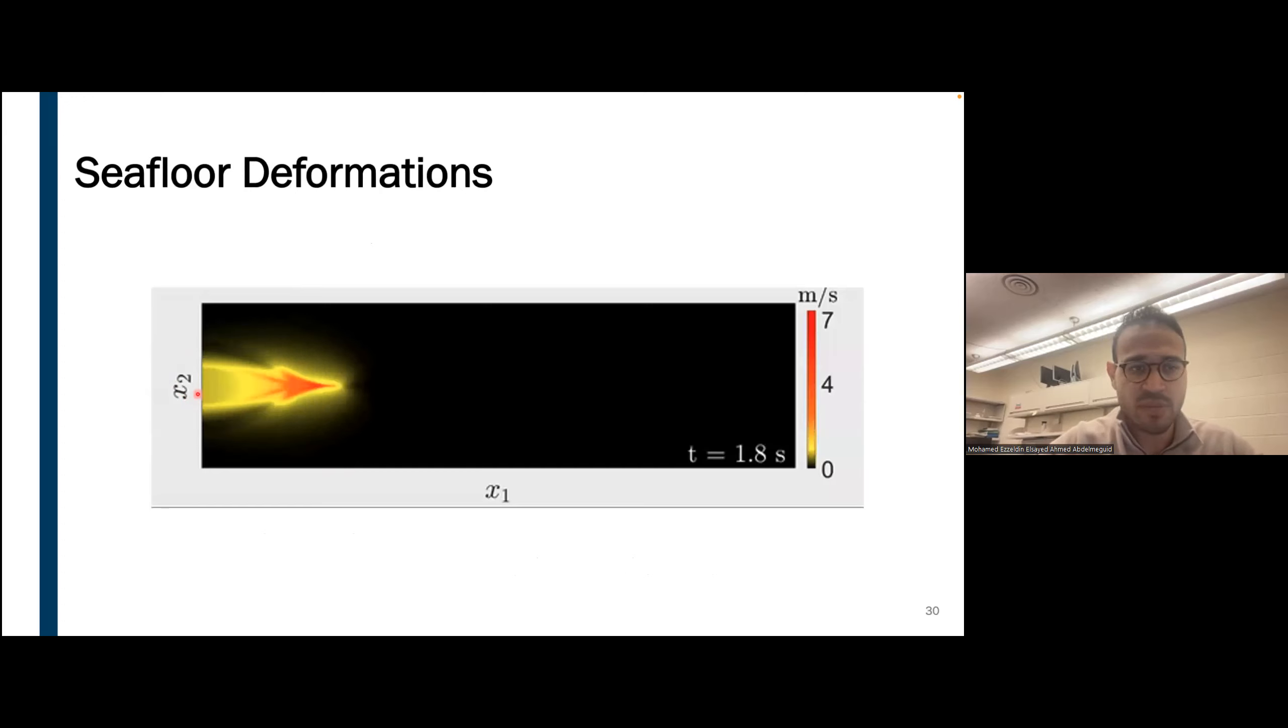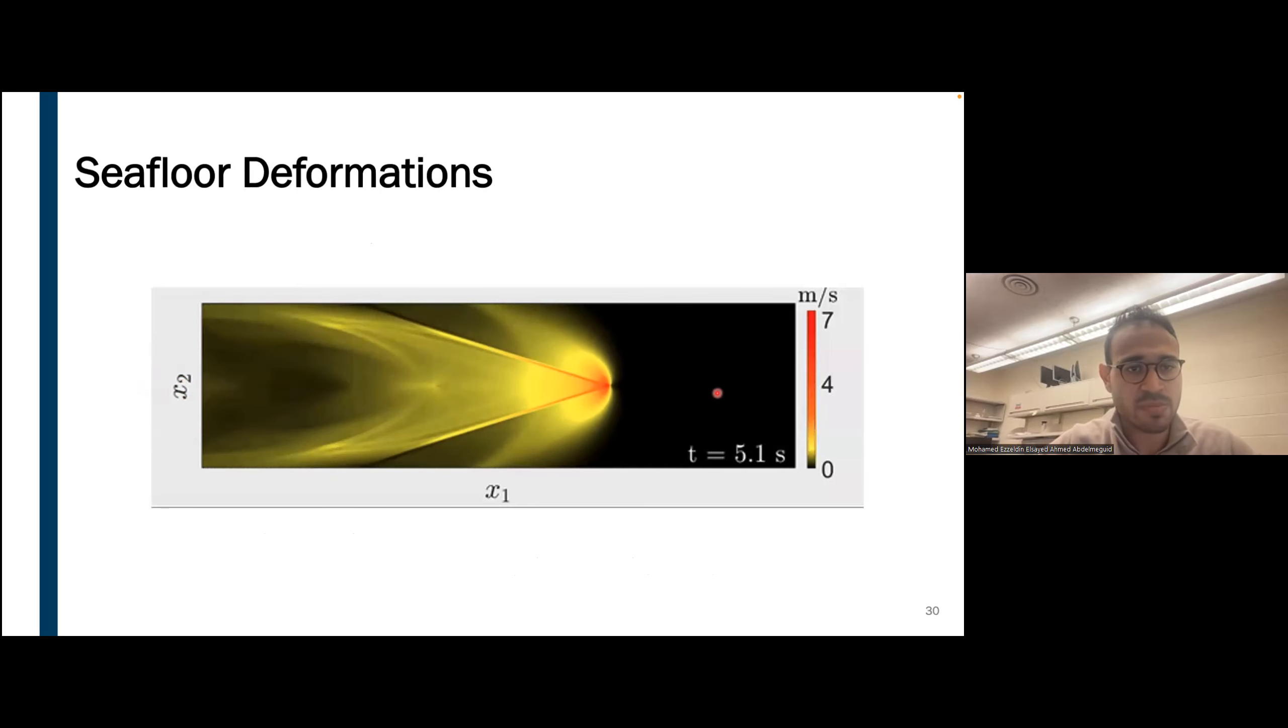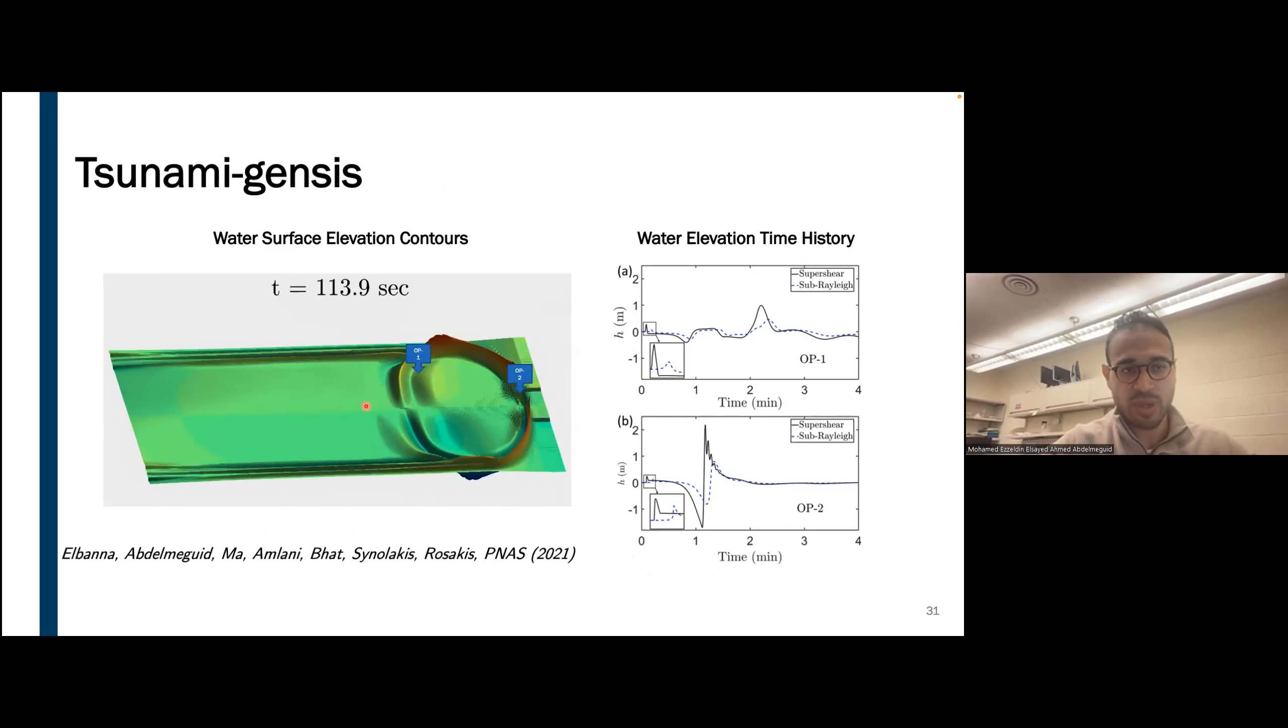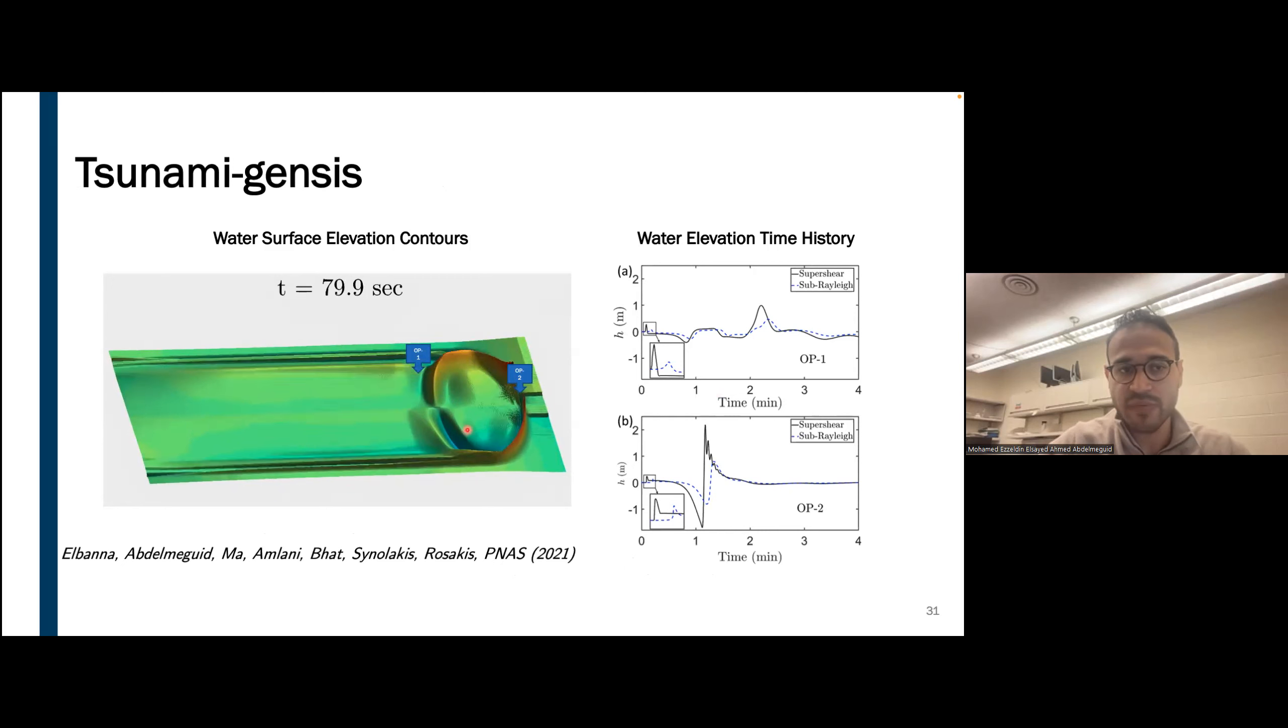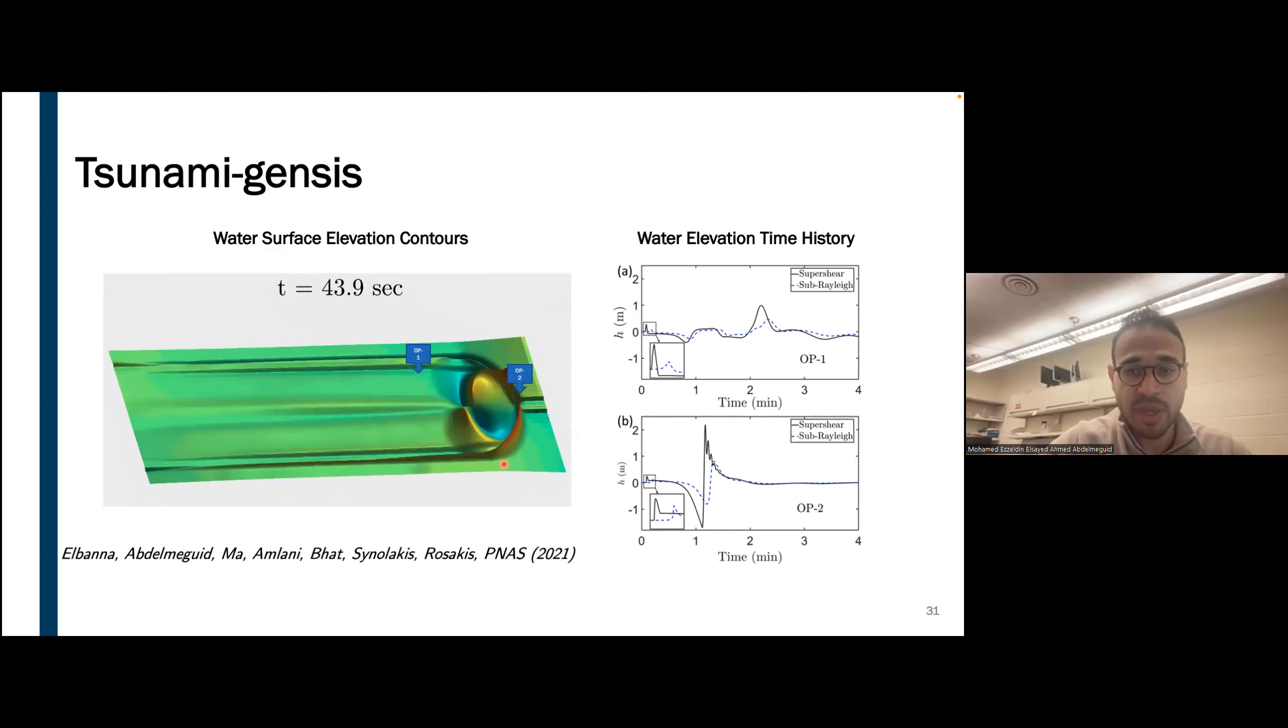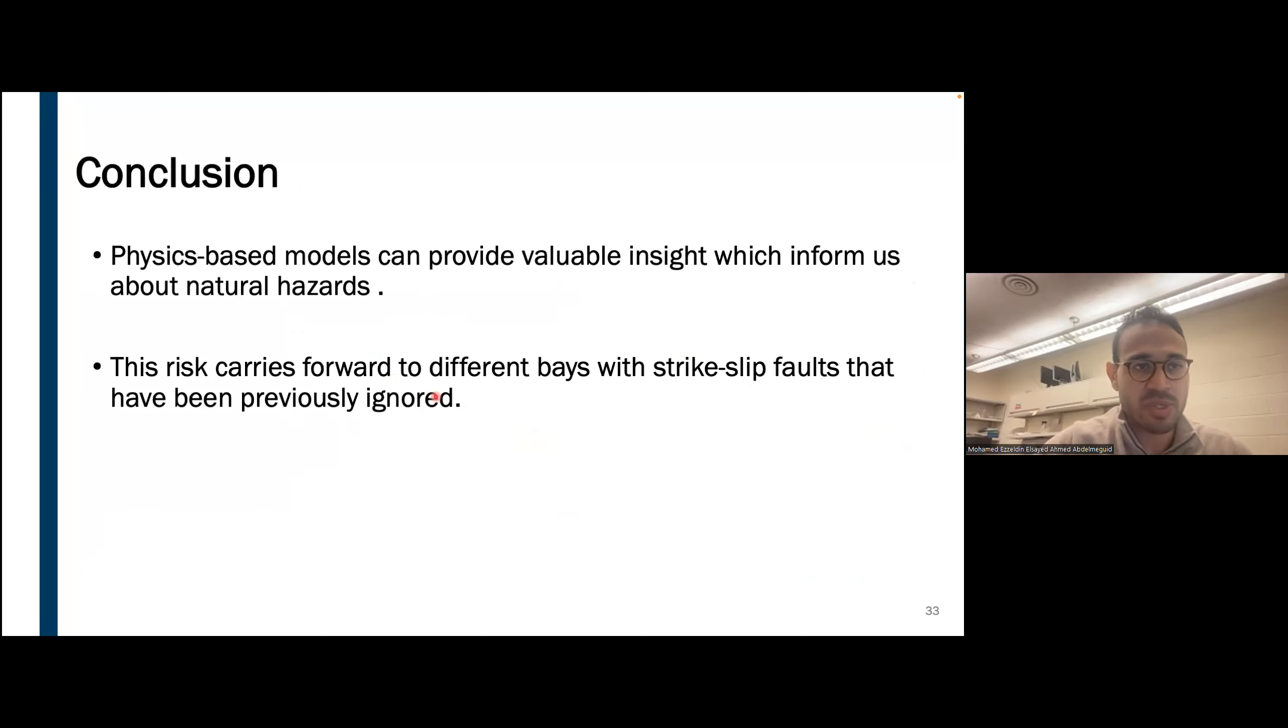What we did is model earthquake mechanics with a shallow water wave equation and try to understand how tsunami would evolve due to the ensuing earthquake. Here I'm showing a video of the seafloor velocity. You can see the wave is propagating due to the earthquake on the Earth's surface. For the sake of time, I'm just going to show a quick video of how the tsunami waves are generated due to that motion on the seafloor. You can see that even a strike slip fault that is primarily moving in the horizontal direction can provide substantial tsunami waves. This is a snapshot of the video demonstrating the same thing. These physics-based models can provide valuable insight on natural hazards. This risk for particularly that tsunami carries forward to other systems that people have previously ignored.